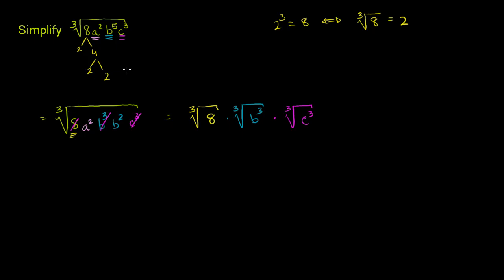Times the cube root of—we have our a² here and then our b². Our a² and then we have a b² right here.